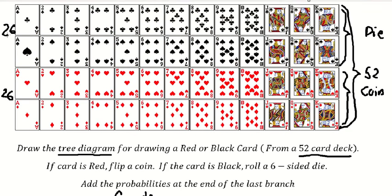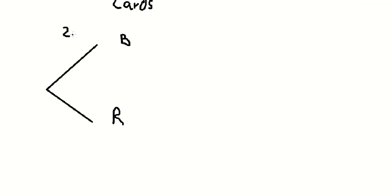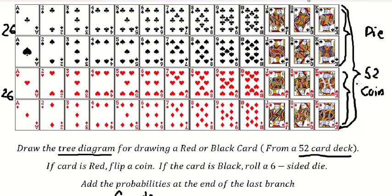So because we have 26 out of 52, so the probability to select the black card, that is about 26 over 52. Similar for this one. So if we simplify the numbers in here, that is about 1 over 2.